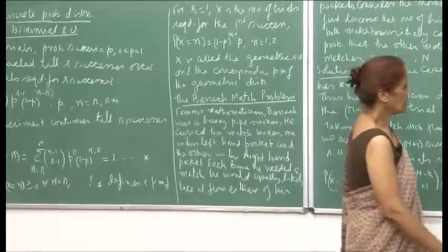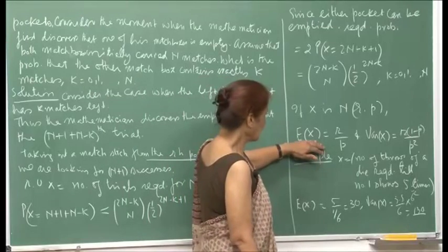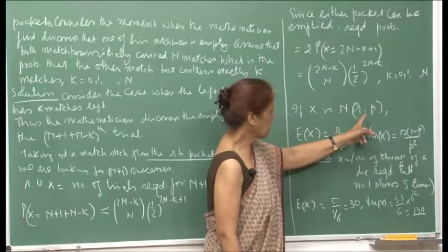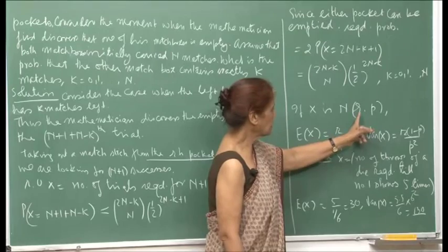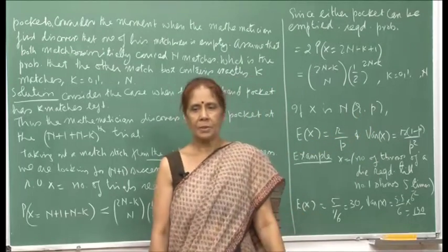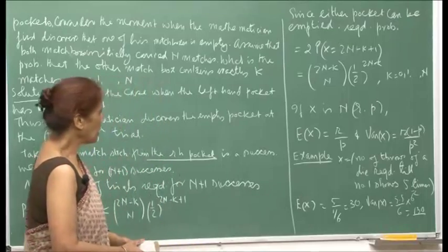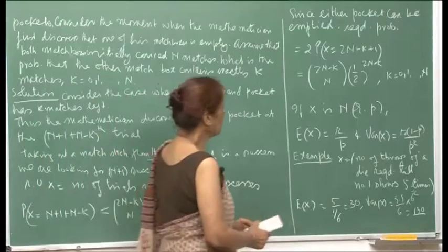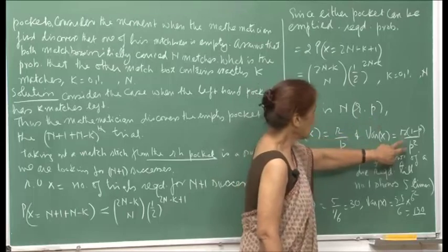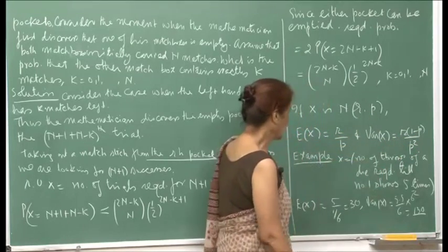The expected value of a negative binomial random variable with parameters r and p — where r successes are required and p is the probability of success — is r by p. The variance of a negative binomial r, p random variable is r times (1 minus p) divided by p squared.